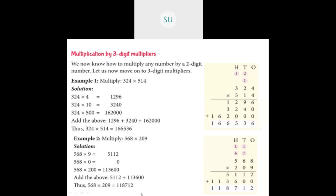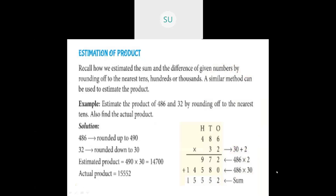This is multiplication by 3 digit multipliers. Now we move to estimation of product. Just as we did estimation of sum and difference by rounding numbers to tens, hundreds, or thousands place, we use the same method to find the estimated product.